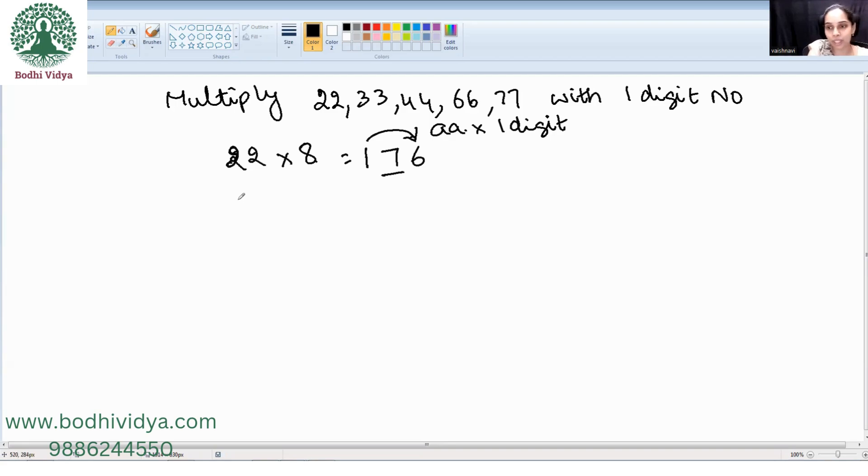We will look into a few more examples. 33 into 4. 3 times 4 is 12. Just add 1 plus 2, which is 3. 3 becomes your middle term.